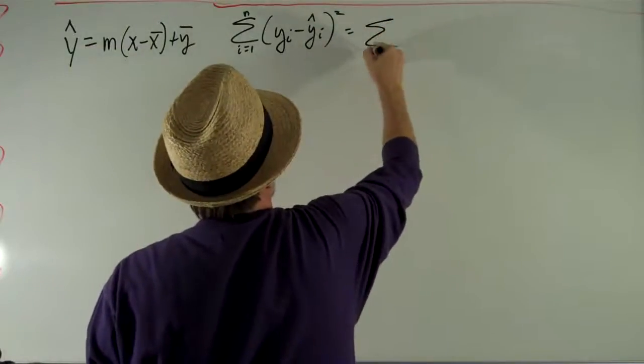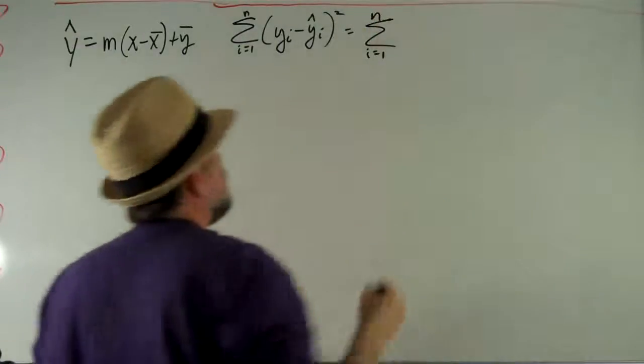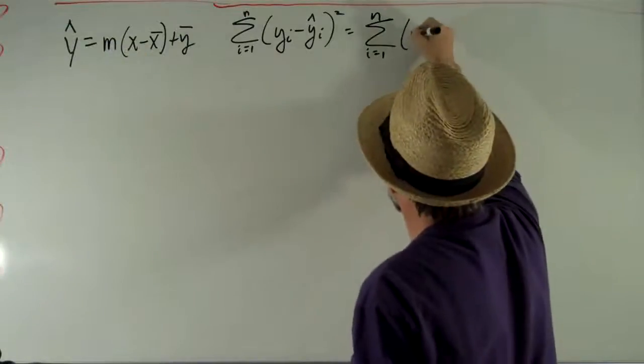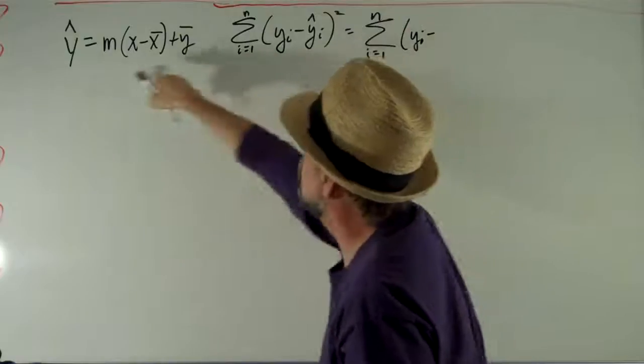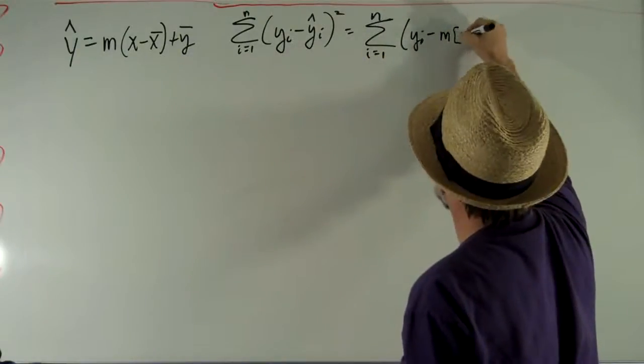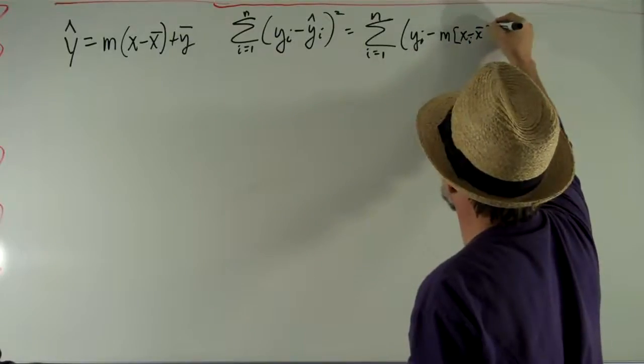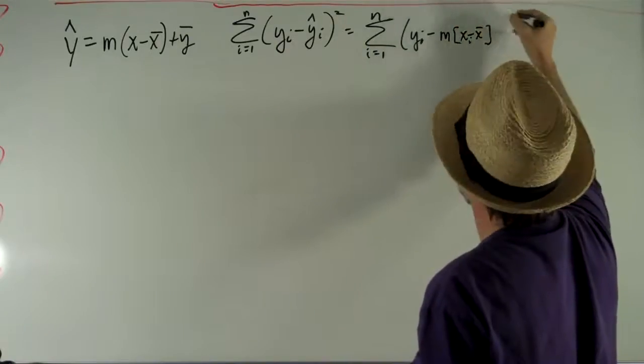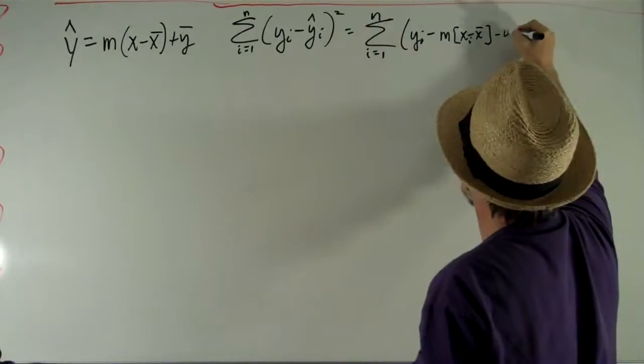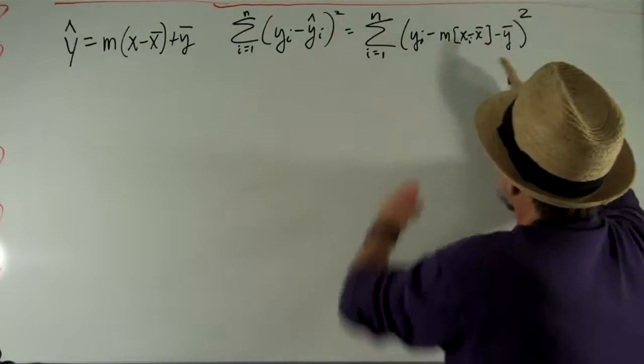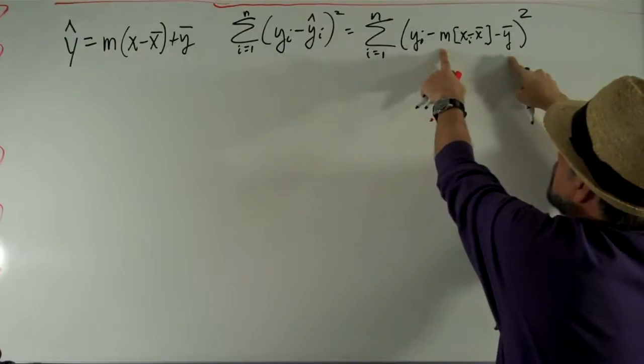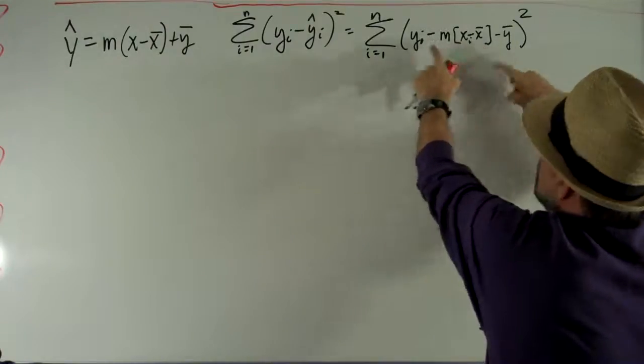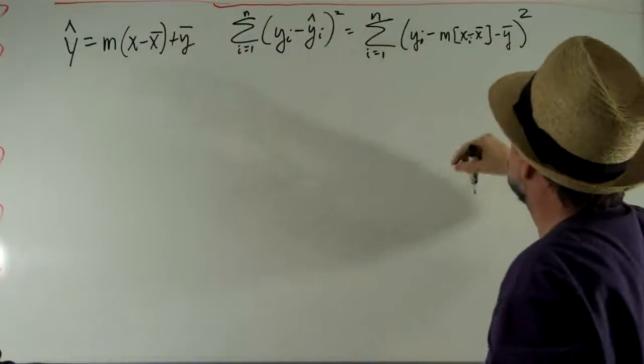It's going to be the sum as i goes from 1 to n of yi minus, let's plug that in, m times xi minus x bar plus y bar squared. When you're subtracting it, the subtraction gets distributed that way.